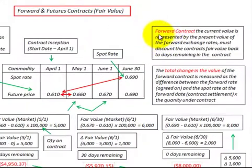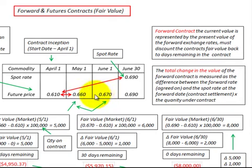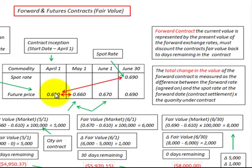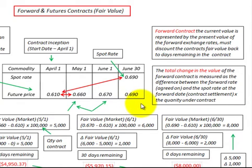In summary, the key point of a forward contract is that its current value is represented by the present value of the forward exchange rates. You must discount the contract's fair value back by the days remaining in the contract. The total change in value of the forward contract is measured as the difference between the forward rate agreed on at the start of the contract and the spot rate at the contract settlement date, multiplied by the quantity under contract.